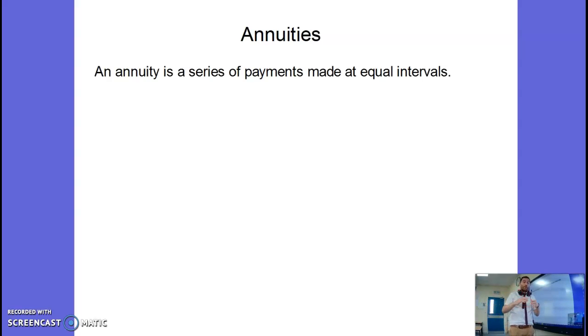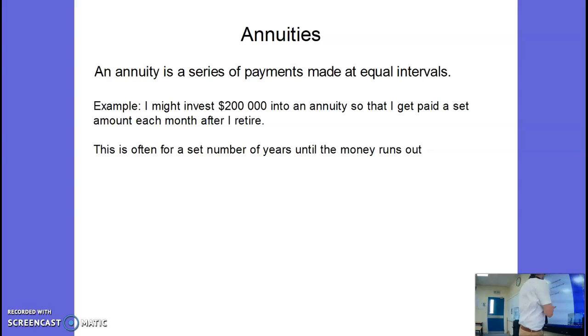Well they are basically a series of payments made at equal intervals. So basically you can either pay a set amount of money into an account every month for example or every year, or you might withdraw a certain amount from an account every year. So for example I might invest $200,000 into an annuity so that I get paid a set amount every month after I retire. That might be for a set number of years until it runs out or there is actually other types of annuity that just pay out until you die basically.